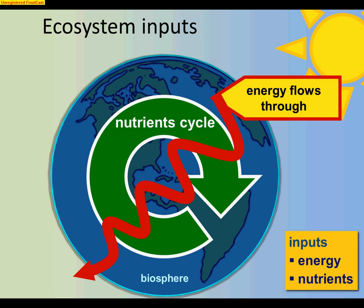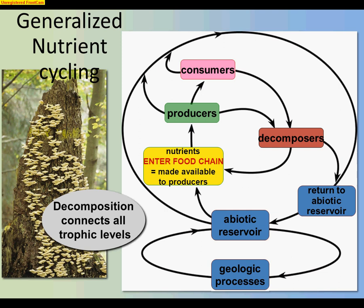I want to focus on the nutrient cycle, since the flow of energy gets into photosynthesis, which comes later. To break down a nutrient cycle as simply as possible, there are a few things to look at: where does the nutrient exist in the non-living world — that's the abiotic reservoir; how does it enter the food chain, perhaps through a producer; how does it get recycled; and how does it return to the non-living part?